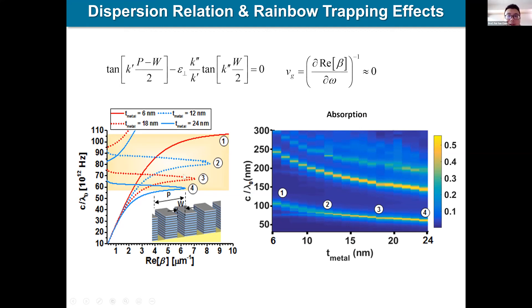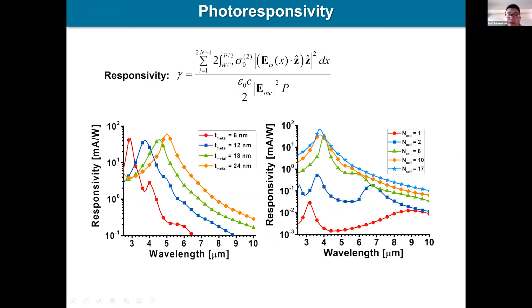We calculate the eigenmode dispersion of this waveguide structure. There are slow-wave modes that trap incident light into the MIM junction, and this slow-wave mode can be tuned by the metal thickness. The corresponding absorption peaks agree well with the slow-wave modes. Next, we calculate the responsivity of our device versus wavelength. The responsivity peak can be up to 100 milliamps per watt, which is applicable for mid-infrared photodetection. This peak can be tuned by adjusting the metal thickness — we can easily change the operating wavelength of the device.